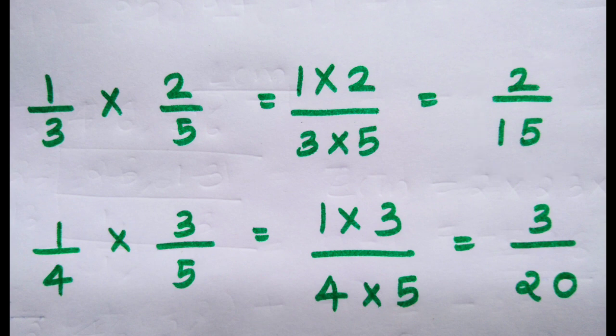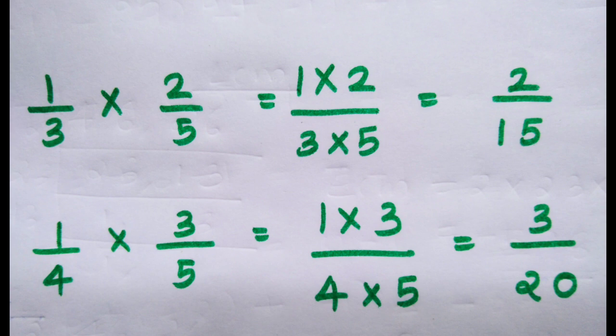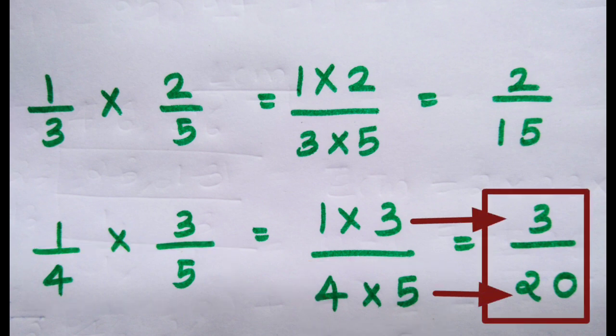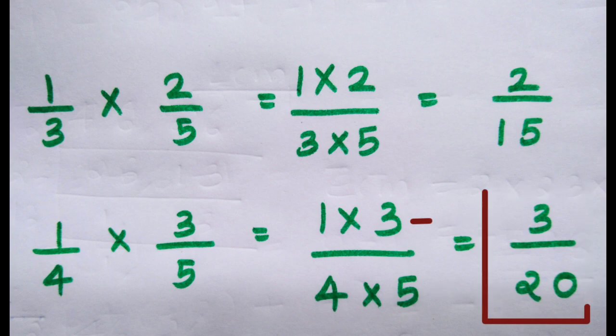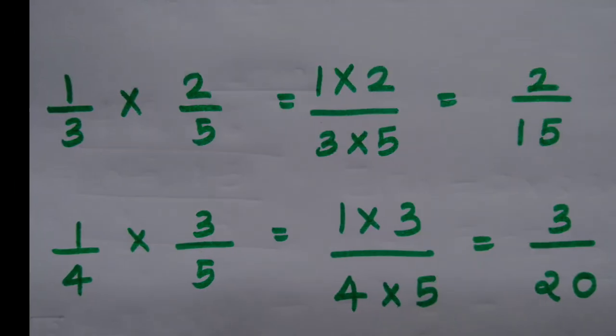Similarly we can multiply two fractions: 1/4 multiplied by 3/5. Multiply the numerator 1 and 3, and the denominator 4 and 5. Numerator we get 3 and the denominator we get 20. So the answer is 3/20.